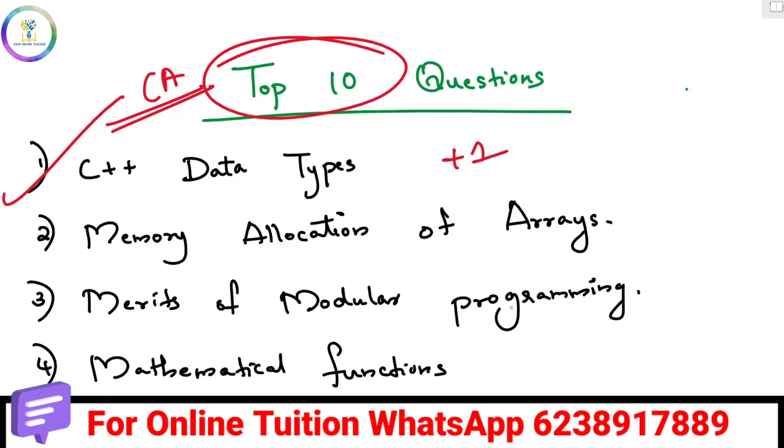So, we are going to learn the 5 types of data types. Then, we are going to learn everything. How do you learn the memory allocation? That is how you learn and how you learn how to write the diagram.